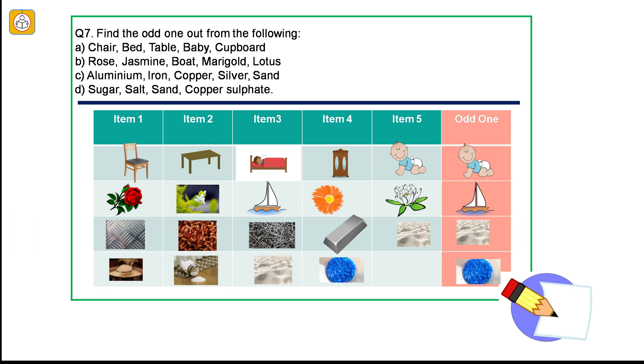Question number 7: Find the odd one out from the following. A. Chair, bed, table, baby, cupboard. The odd one out is baby, which is a living object. B. Rose, jasmine, boat, marigold, lotus. The odd one out is boat, which is not a flower. C. Aluminium, iron, copper, silver, sand. The odd one out is sand, which is not a metal. D. Sugar, salt, sand, and copper sulphate. As you can see, copper sulphate is bright and blue in colour, is the odd one out.